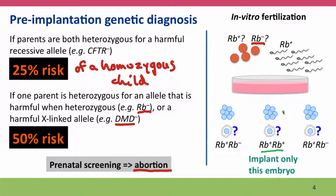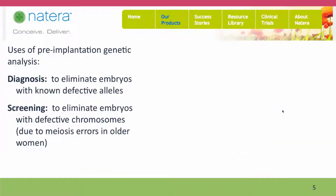So the normal embryo is the one that will be implanted in the woman. Pre-implantation genetic analysis can be used in a diagnostic way to eliminate embryos that have defective alleles, but it also plays a screening role — mainly for older women trying to get pregnant — using the same technique to identify and eliminate embryos that have defective chromosomes.